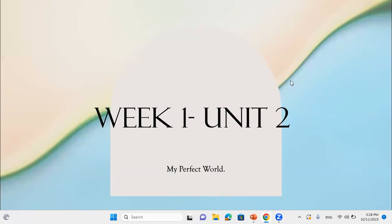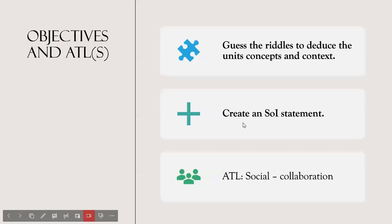Welcome everyone to the second unit — the first week of the second unit, titled 'My Perfect World.' Based on the title, you can deduce that we might be talking about what is perceived as a utopian society. In the first lesson, as usual at the beginning of each lesson, we are going to guess the concepts and context of the unit through diverse riddles.